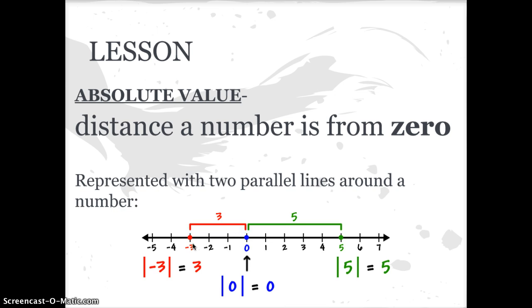How far away is negative three from zero? Well, it's three units away from zero. And the way you would write this, you see this negative three with the two parallel lines to it. Those two parallel lines mean absolute value. So the absolute value of negative three is three.